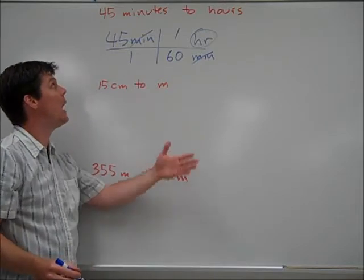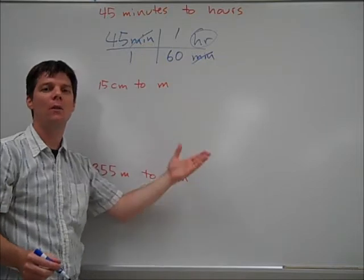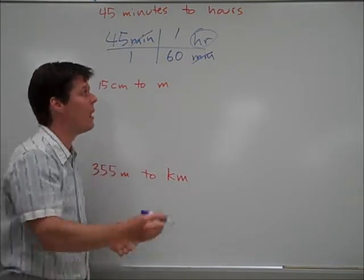Mathematically, all we need to do now is to take 45, multiply by 1, divide by 60. If you want to skip the multiply by 1, that's fine. 45 divided by 60 gives us an answer of 0.75 hours.